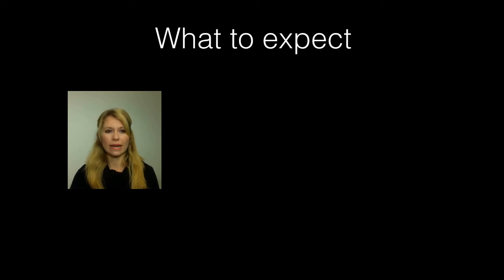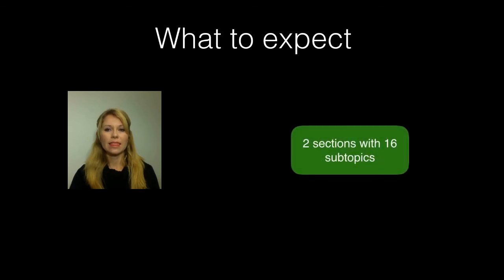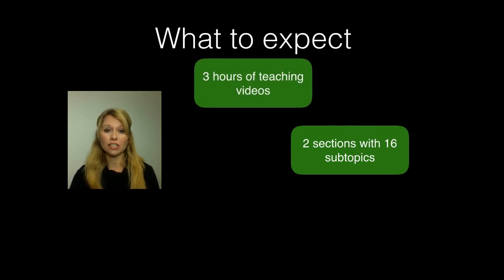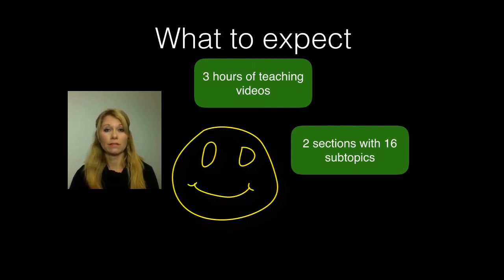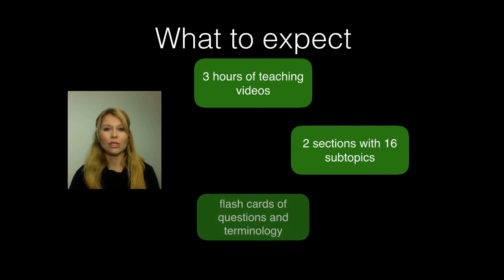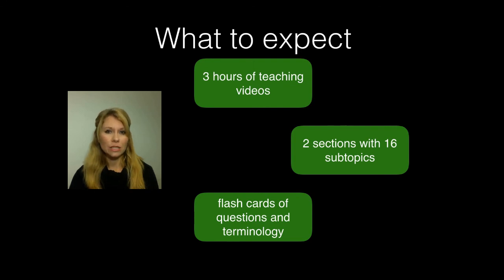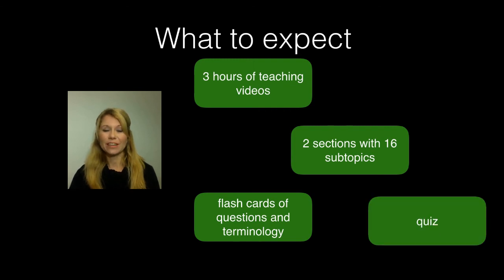Each of those sections has got a video of the subtopics, meaning there are 16 short videos. So in just over three hours of teaching, you will learn inheritance and selection and variation. If you think about how much you have to pay for extra lessons, this is really cost beneficial to you and your parents. I've also included flashcards on terminology and questions that you can download and print for a quick revision before a test or exam. There's a short quiz at the end of each section too, so you can do a self-check to see that you're on track.